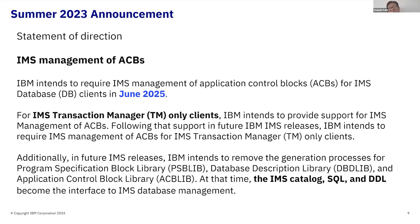For clients that have IMS TM only, we are working on an architecture where you can implement IMS managed ACBs without implementing the catalog. We haven't finished that yet, and when it becomes available we'll announce it with a date for TM-only clients. What does 'required by summer of 2025' mean? Every year we come out with a new release of IMS — last year 15.4, this year 15.5. Whatever release we come out with next year, it will require that you implement IMS managed ACBs in order to migrate to it. If you attempt that migration without having IMS managed ACBs implemented, your migration will fail.